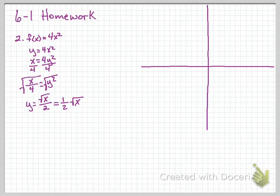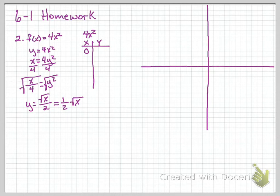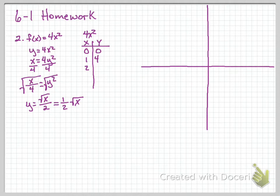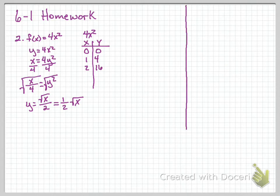Now let's do some graphing. Let's get some points for the original 4x squared. We need our x and our y. We're going to start with point 0: when we put 0 in for x, square it and multiply by 4, we get 0. For 1: 1 squared is 1, times 4 gives us 4. 2 squared is 4, times 4 gives us 16. That's all we're going to use. We need to make our graphing area a little bit bigger.